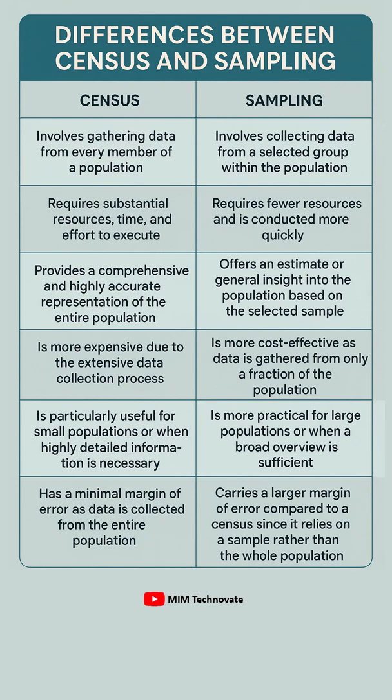Census is more expensive due to the extensive data collection process. Whereas sampling is more cost-effective, as data is gathered from only a fraction of the population.